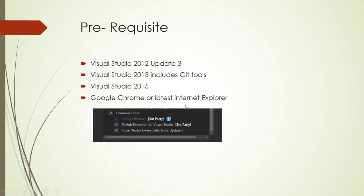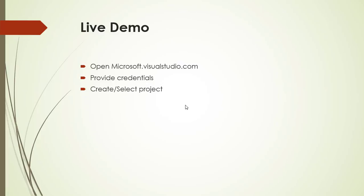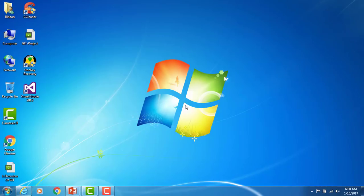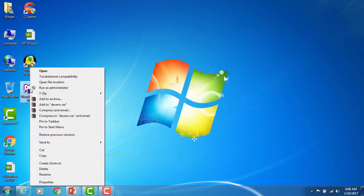Now coming to the live demo of how to connect Visual Studio 2015. First we need to create or get an account at microsoft.visualstudio.com. If you're working in a company, they will provide access to the code in microsoft.visualstudio.com, but we still need to check whether we have the required permissions for a particular project. Let me open Visual Studio 2015 in Run as Administrator mode.